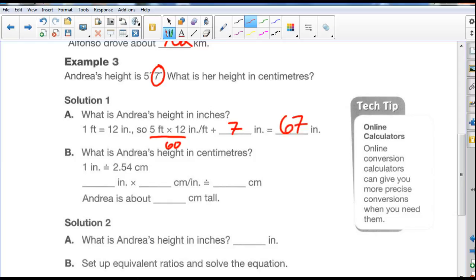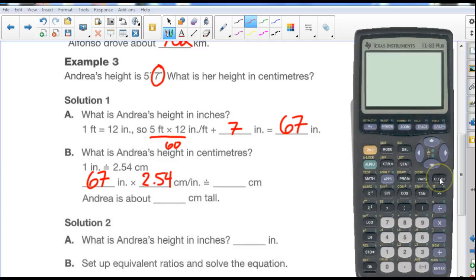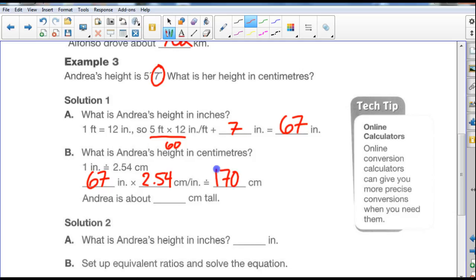What is Andrea's height in centimeters? Well, we know that 1 inch is 2.54 centimeters, so we take 67 inches, which is her height. We multiply that by 2.54 centimeters per inch. And take our calculator, 67 times 2.54, that's the conversion ratio, is 170.18. Let's round it to 170.2, 170.2 centimeters. So Andrea is about 170 centimeters tall.